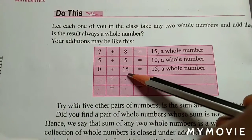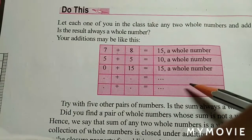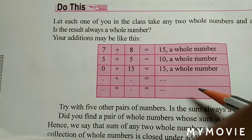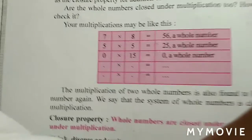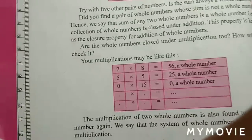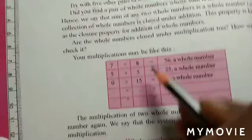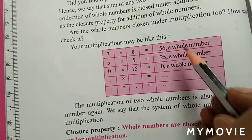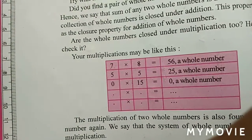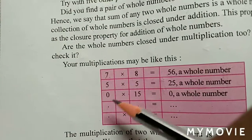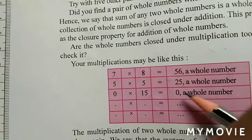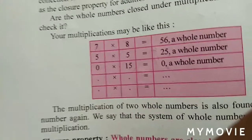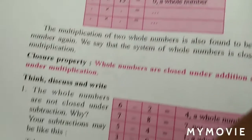तो हम बोल सकते हैं कि whole numbers are closed under addition. ऐसे ही कोई भी whole number के साथ कोई भी whole number जोड़ दो तो जो number आएगा वो हमेशा whole number ही निकलेगा। Multiplication की time में भी — seven is a whole number, eight is also a whole number, so 7×8 = 56 is a whole number. That's why we can say whole numbers are closed under multiplication also.